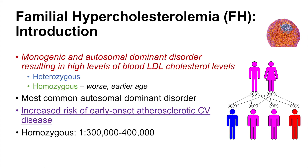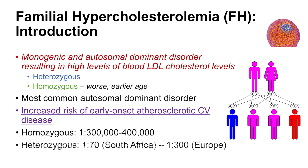Homozygous individuals are very rare — usually 1 in 300,000 to 400,000. But heterozygous individuals are more common. In parts of South Africa, individuals have a 1 in 70 chance of being heterozygous. In parts of Europe, individuals have a 1 in 300 chance, with numbers in the U.S. about 1 in 200 to 1 in 250.